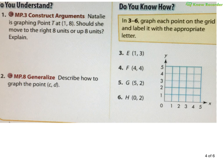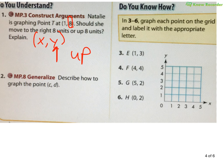Natalie is graphing point T at (1, 8). Should she move to the right 3 units or up 3 units? Well, if we remember, we have x and then y. Where's the 8? It's in the y coordinate. Y goes up and down, so we would move up 8 units.